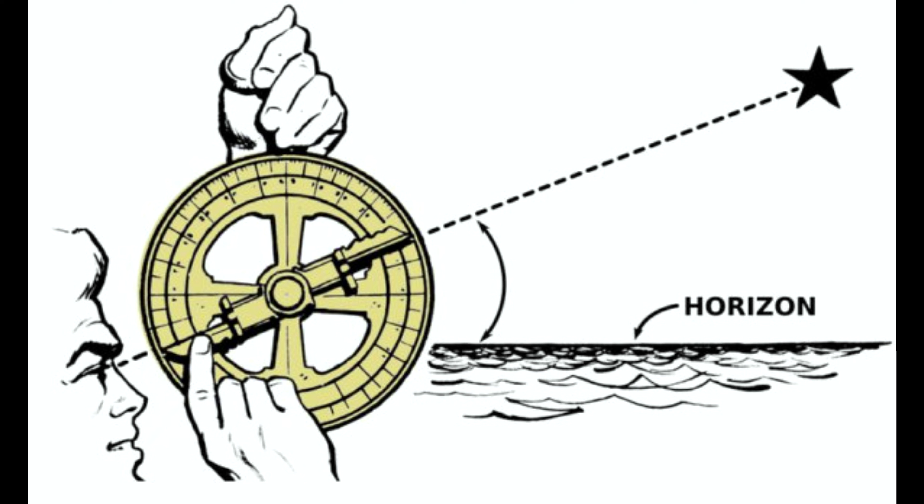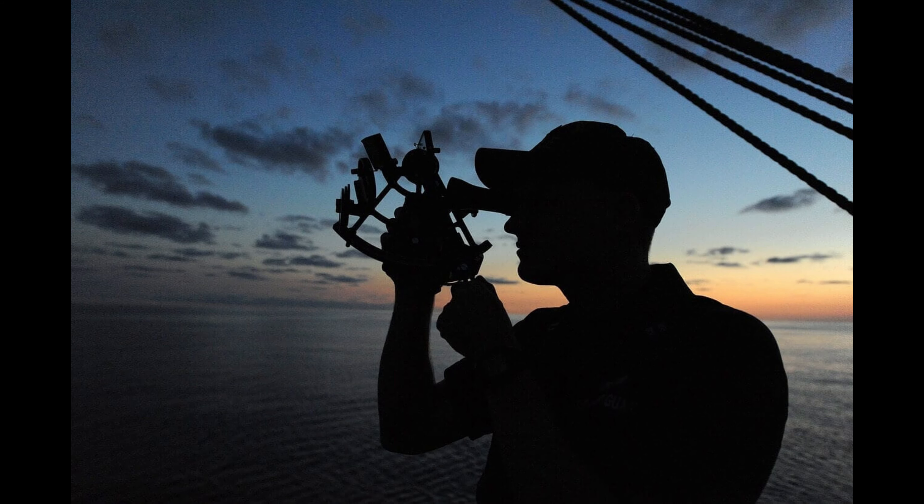It turns out that that angle up to Polaris can be used to estimate what latitude you're on. And this has actually been done for many, many years by navigators through history. There's a reason astrolabes and sextants exist, and they can do a lot more than what I show here.